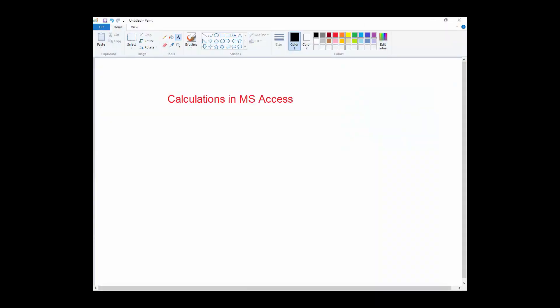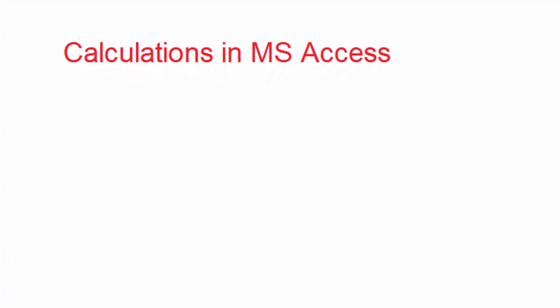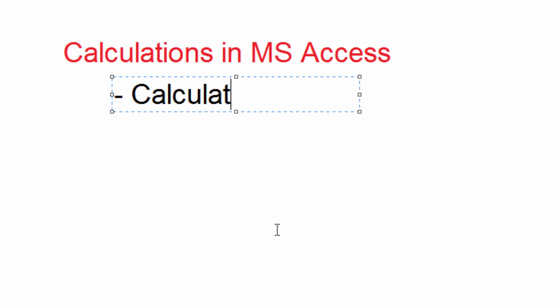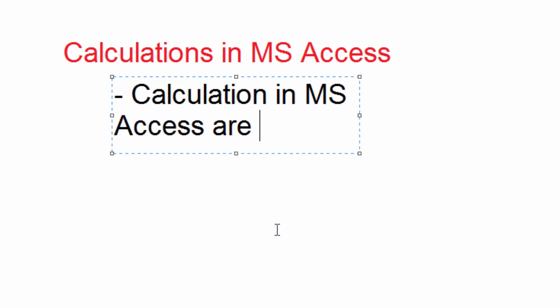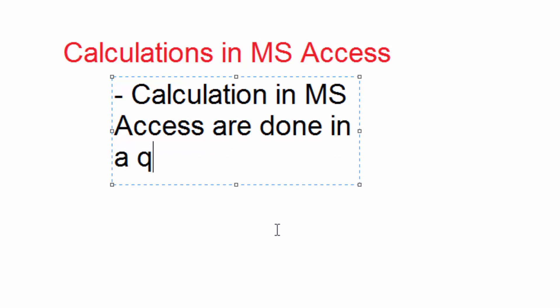Hello and welcome. Today I want to show you how you can do calculations in MS Access and get a result, just like in MS Excel where you can put an equal sign in a cell and calculate two or more values. Likewise in Access you can do the same. The point to note is in Access, when you are doing calculations, you must do it in a query.